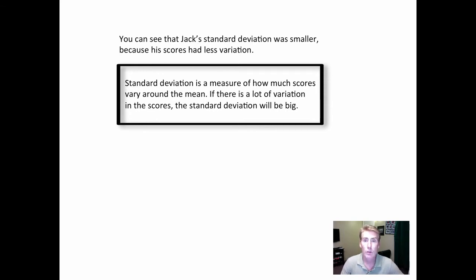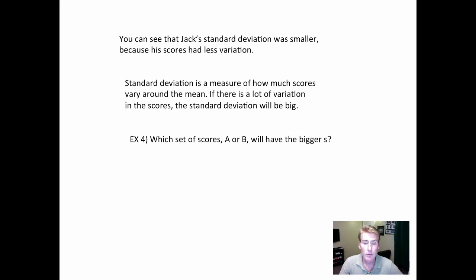So basically, standard deviation is a measure of how much the scores vary around the mean. Are they all very close to the mean or are they spread out? Here's one example: if all of the scores were the same, what would the standard deviation be? You're right, it's zero, because if all the scores are the same there is no variation, so s would equal zero.